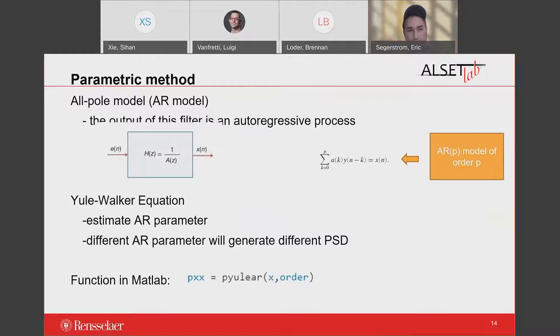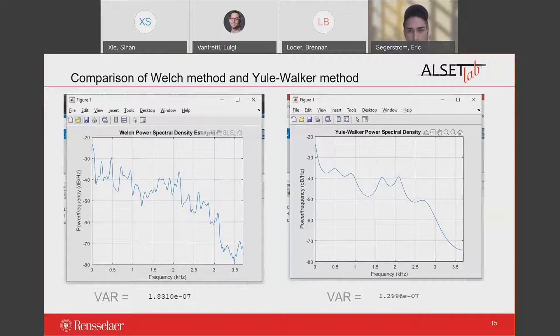This method can provide some benefits such as minimizing the forward prediction error in the least square sense and always producing a stable model with less variance. The graph on the left shows the AR model as a linear system, and the PSD estimation function by Yule-Walker method in MATLAB is shown at the bottom of the page, where X is the input signal, order is the order of the autoregressive model used to produce the PSD estimate, and Pxx is the PSD estimate. I also make a comparison between the PSD of the signal using Welch method and the Yule-Walker method. The Yule-Walker method is smoother and the variance of the PSD is a little bit smaller than the Welch method.